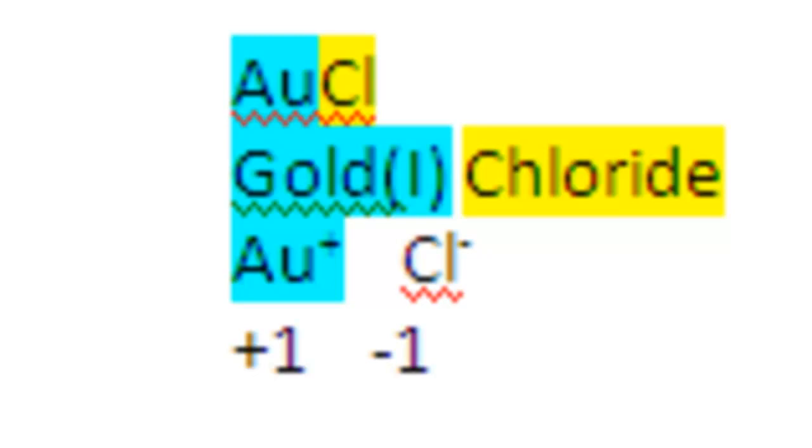Here's gold chloride. This is gold 1 chloride. It's gold 1 because there's 1 chloride. As we've seen already numerous times, chloride is always negative 1. The formula lists 1 gold, so the gold must be in the plus 1 state.